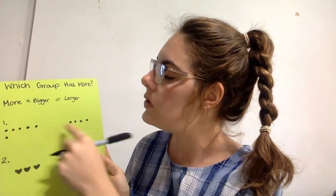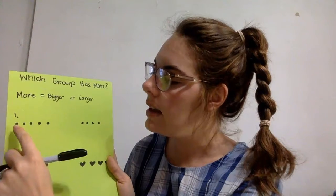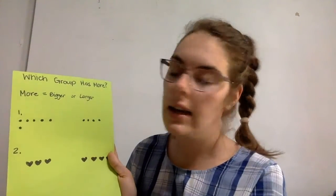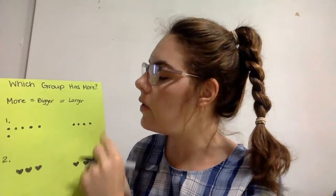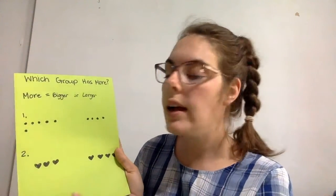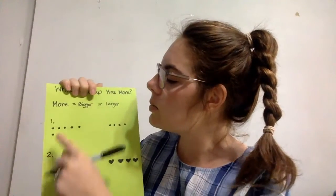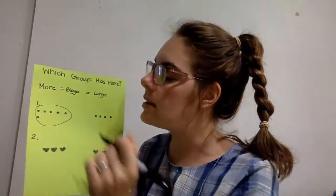I have two groups of circles. Let's count and see how many: one, two, three, four, five, six. I have six here and a group of one, two, three, four. Which group has more or is larger? That's right, the group that has six is larger so I'm going to circle that because that is a larger, bigger group that has more.